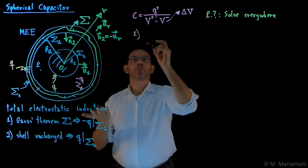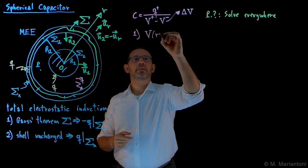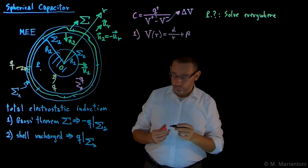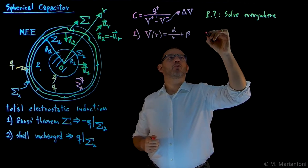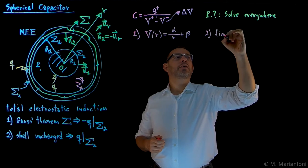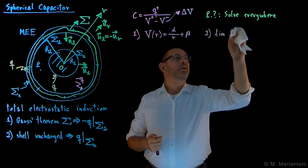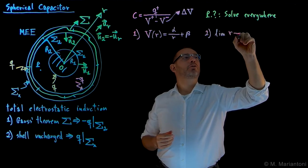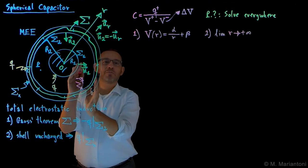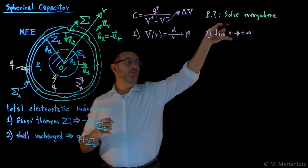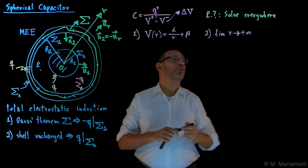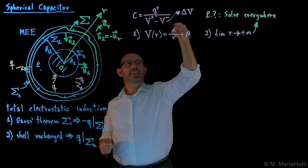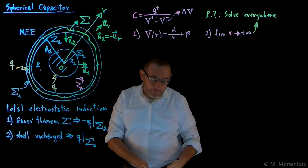The Laplace equation for spherical symmetry gives us V in this spherical coordinate system of r equal to alpha over r plus beta — two parameters because it comes from a Laplace equation. The second condition we typically use is the boundary condition at infinity, r going to infinity. But I'm not going to use it here because I only want to find the potential difference in this confined region. If you want to solve the problem everywhere, you need to use it. Since I want to compute a delta V, this beta cancels out, so I don't have to compute it.